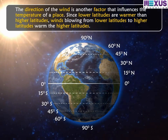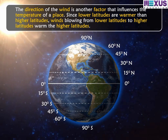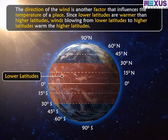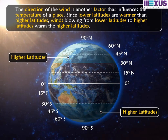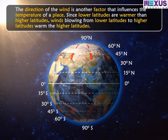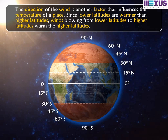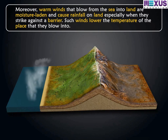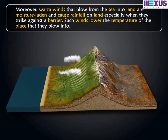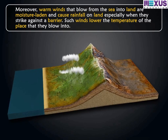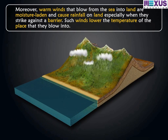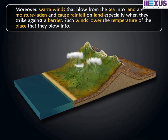The direction of wind is another factor that influences the temperature of a place. Since lower latitudes are warmer than higher latitudes, winds blowing from lower latitudes to higher latitudes warm the higher latitudes. Moreover, warm winds that blow from the sea into land are moisture-laden and cause rainfall, especially when they strike against a barrier. Such winds lower the temperature of the place they blow into.